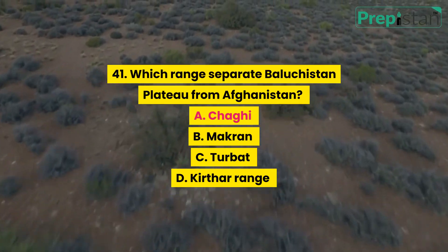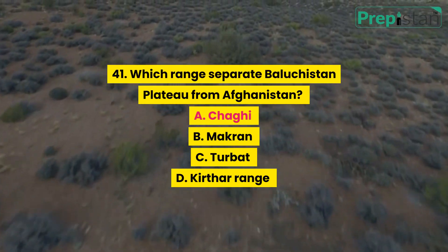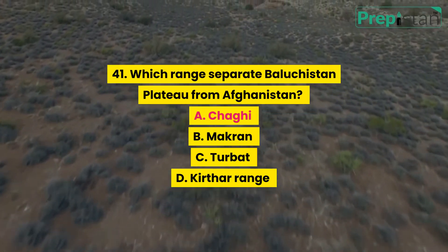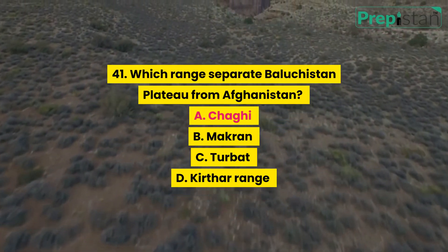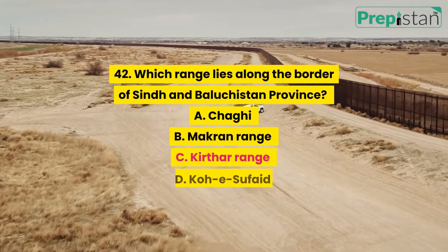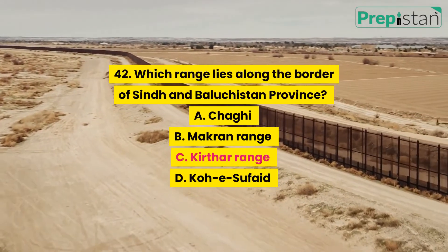Questions 38-41: (garbled segment) Options include heights 7,000 m, 7,500 m, 7,100 m, 7,300 m. Question 41: Which range separates Balochistan Plateau from Afghanistan? A. Chagai, B. Makran, C. Turbat, D. Kirthar range.